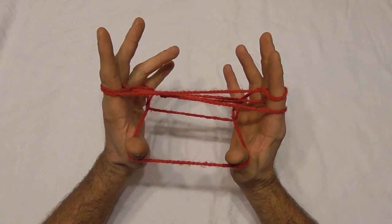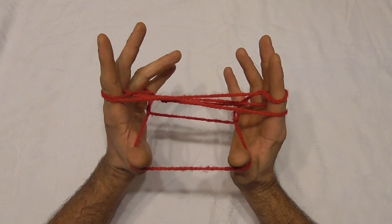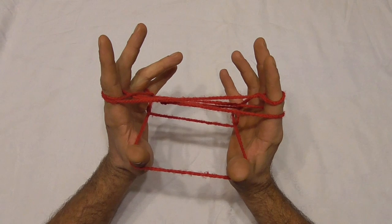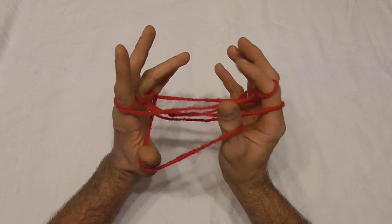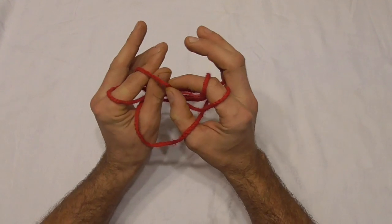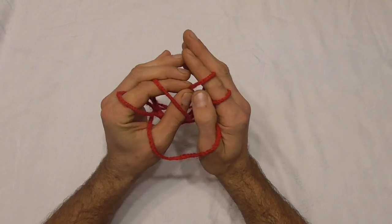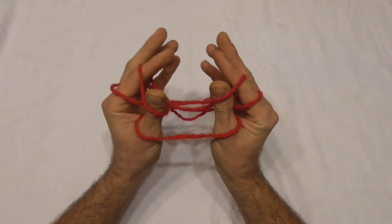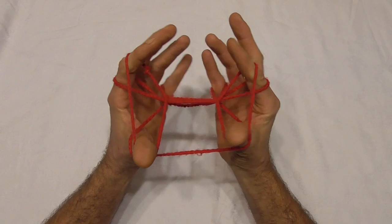Now you should find that there's two loops on your pointer fingers. I want you to get your thumbs into the top loop. So push your thumbs into the top loop without pulling them off your pointer finger and then spread that top loop apart.